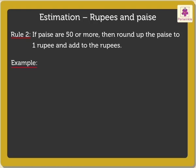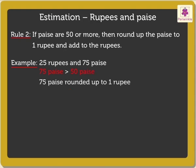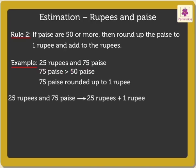Now let's consider the amount as 25 rupees and 75 paise. Here, as 75 paise is greater than 50 paise, we round it up to 1 rupee. So on adding this 1 rupee to 25 rupees, we get the estimated amount as 26 rupees.